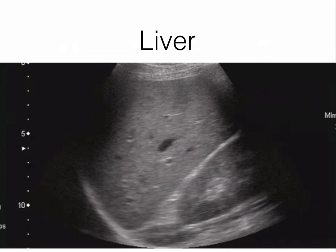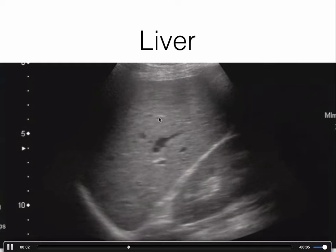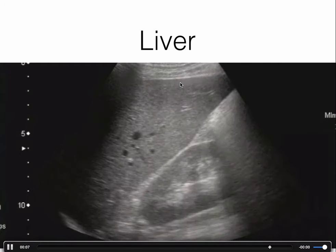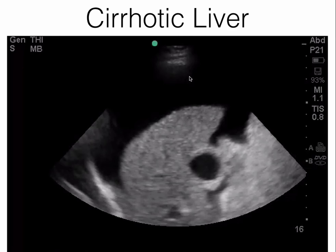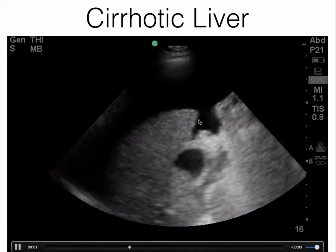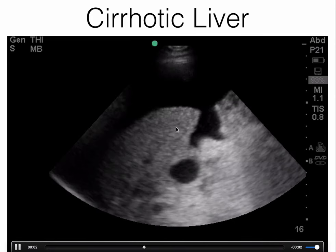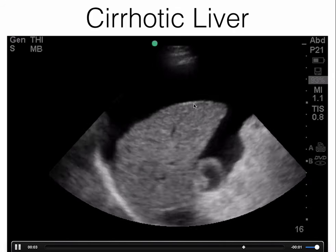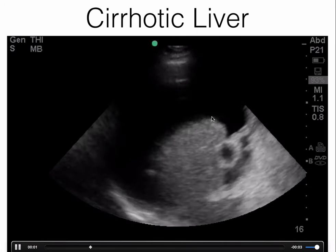We're almost done — let's take a quick look at the liver. This is a normal liver with uniform echogenicity throughout, a nice smooth surface, and no nodules or bumps. Now take a look at this cirrhotic liver — note how echodense and echogenic it is because scar tissue has replaced normal liver tissue. Also note how irregular and nodular the surface is, and there tends to be ascites present.